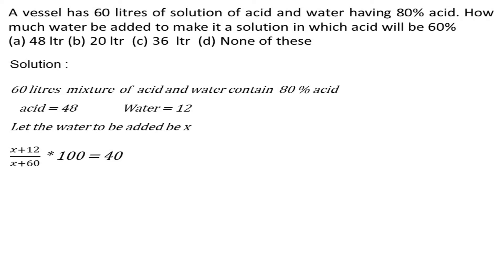तो जब हम percentage निकालते हैं, पानी की संख्या अभी x plus 12 हो जाएगी। 12 liter पहले था, अभी हमने इसमें x जोड़ दिया, और total solution कितना हो जाएगा — 60 liter।